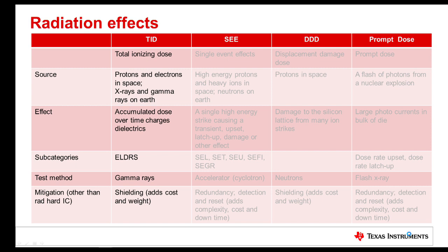In space, the major source of TID is electrons and protons; on Earth, it's mostly x-rays and gamma rays. TID is the accumulated ionizing dose over a period of time. The ionizing radiation causes charging of dielectrics in an integrated circuit, which can eventually lead to failure of the circuit. Typically, testing is done using gamma rays. Mitigation for TID, other than using a rad-hard IC, is to use shielding, but this adds cost and weight to the system.